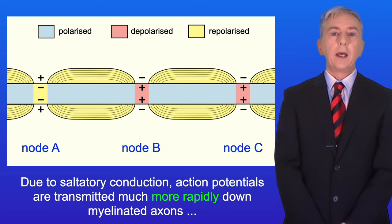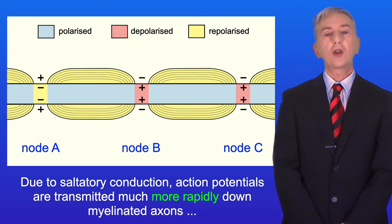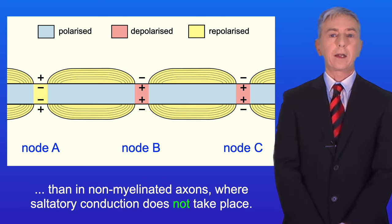Due to saltatory conduction, action potentials are transmitted much more rapidly down myelinated axons than in non-myelinated axons, where saltatory conduction does not take place.